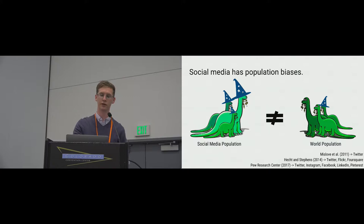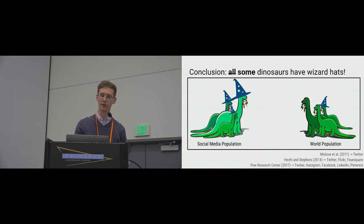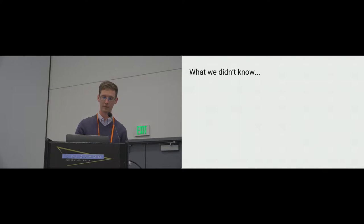Social media has population biases, which is to say it's not always representative of the broader population. And this can skew conclusions in research done using social media, because we can easily miss phenomena and populations that are not appropriately represented on these platforms. But the community is doing a good job of delineating this and restructuring research to account for it, allowing us to reach more representative conclusions.